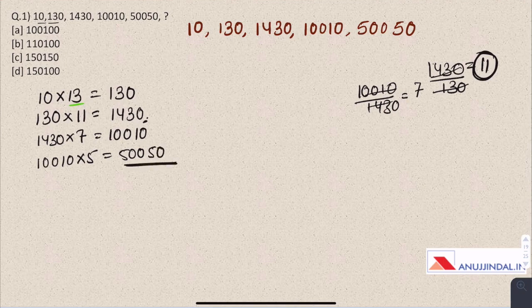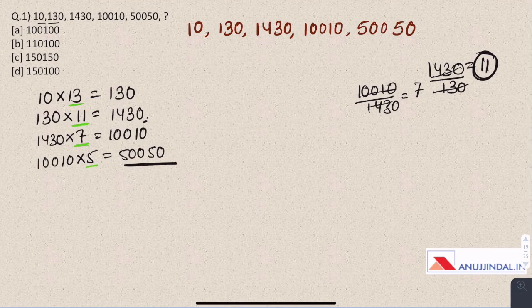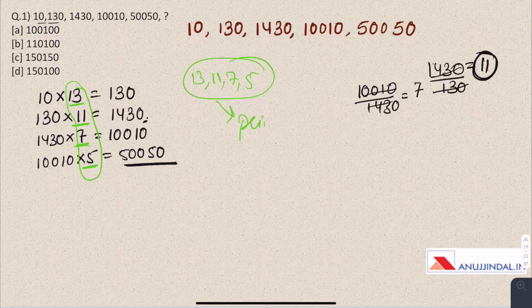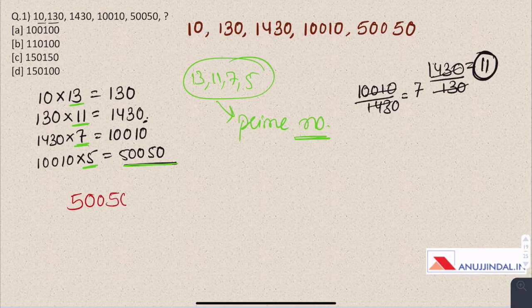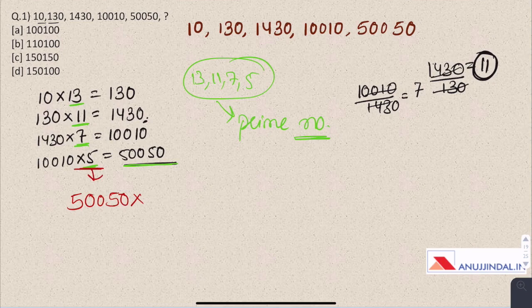If we notice these numbers 13, 11, 7, and 5 which are descending numbers, they are prime numbers. So to find the next number in the series, we have to multiply 50050 with the next prime number in a descending order. So the next prime number would be 3, so we will multiply it by 3 and then we get 150150.